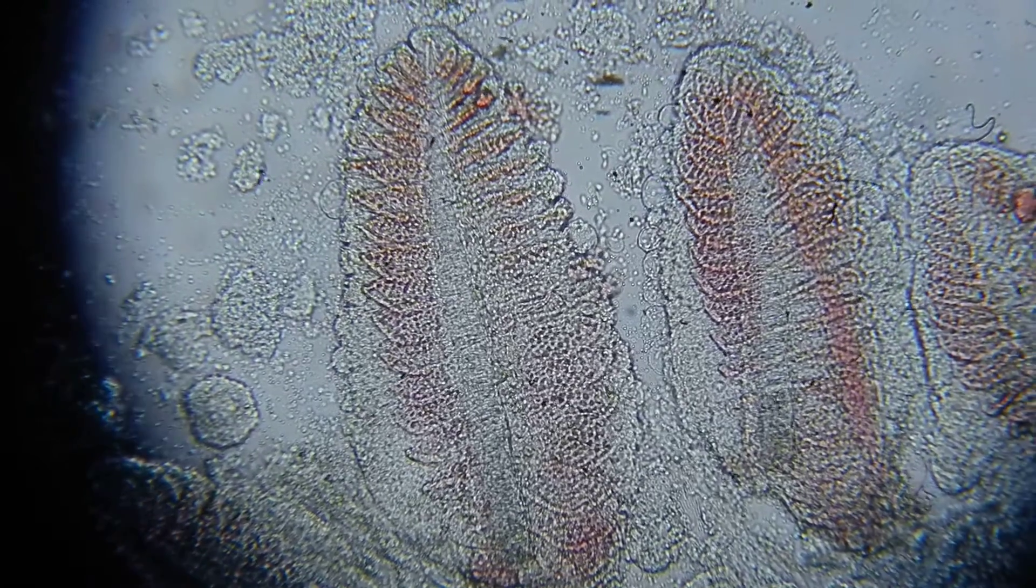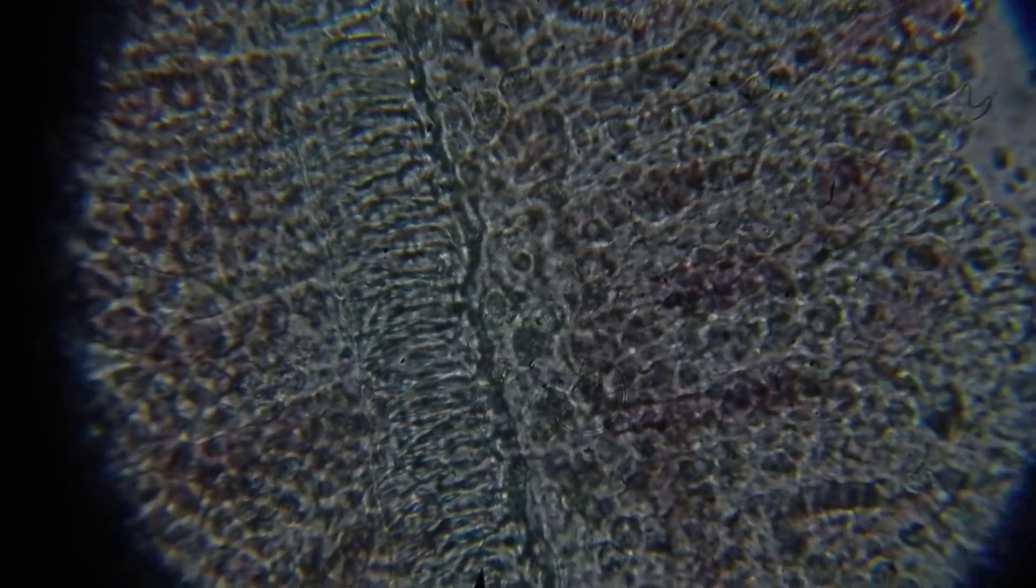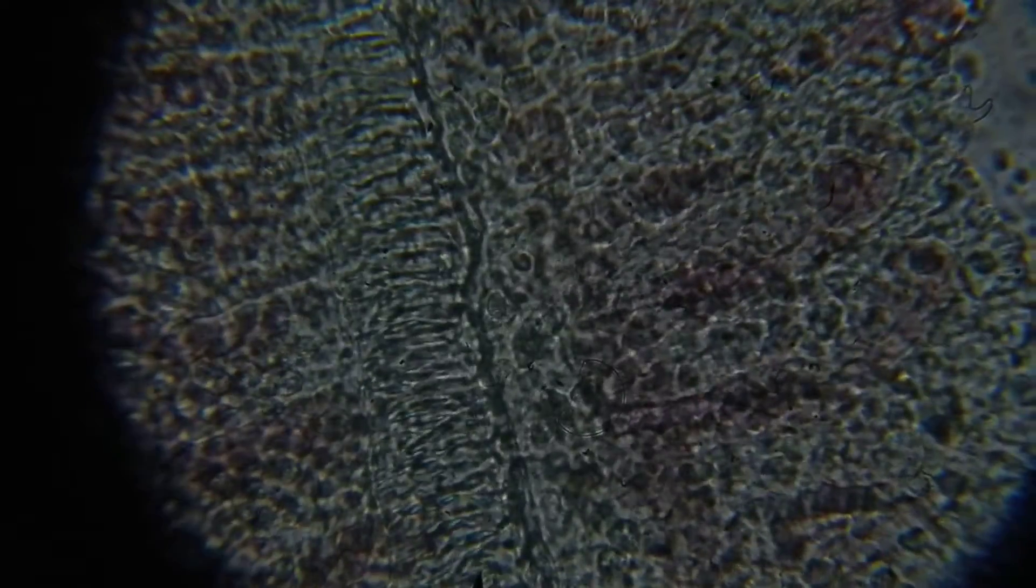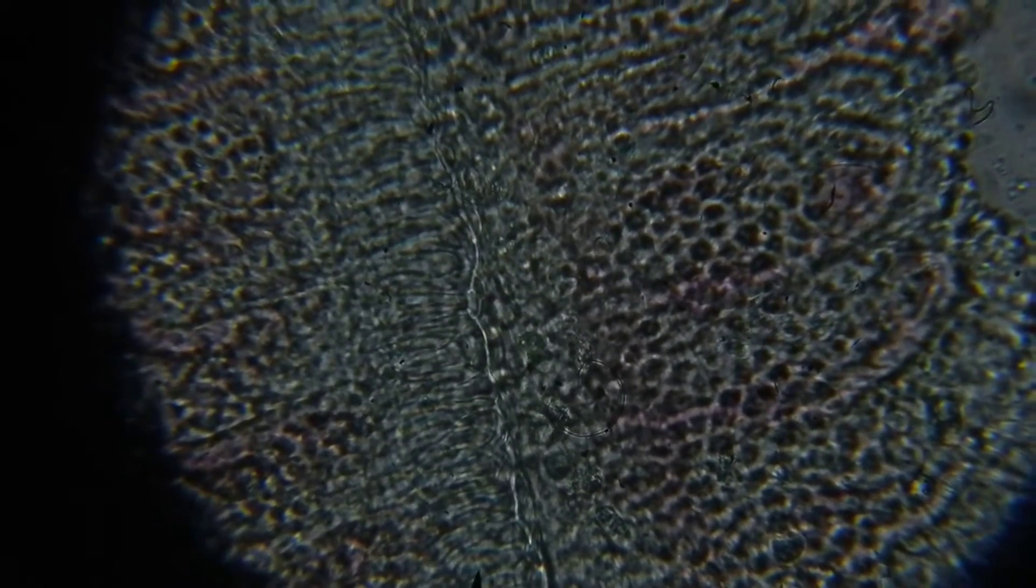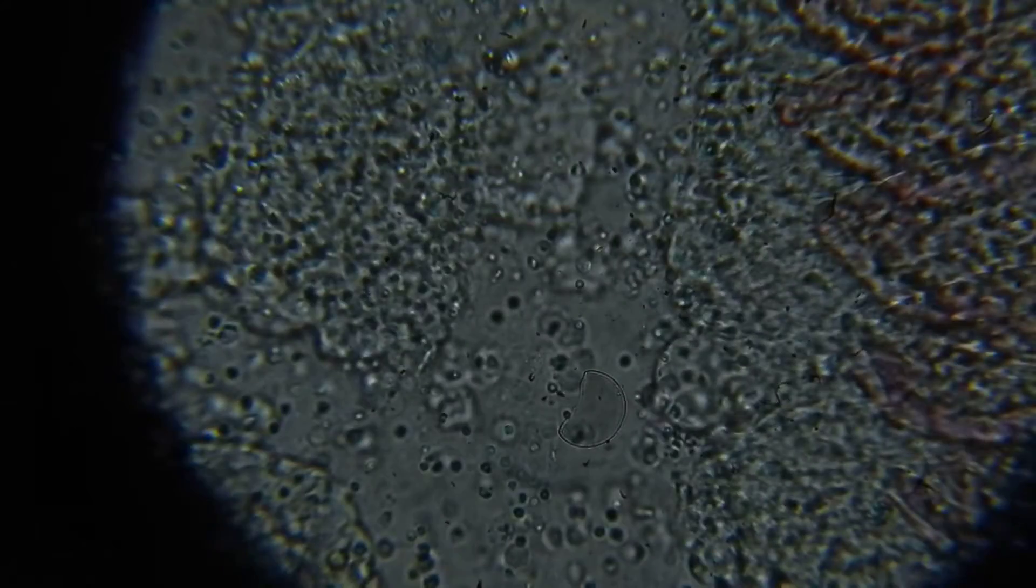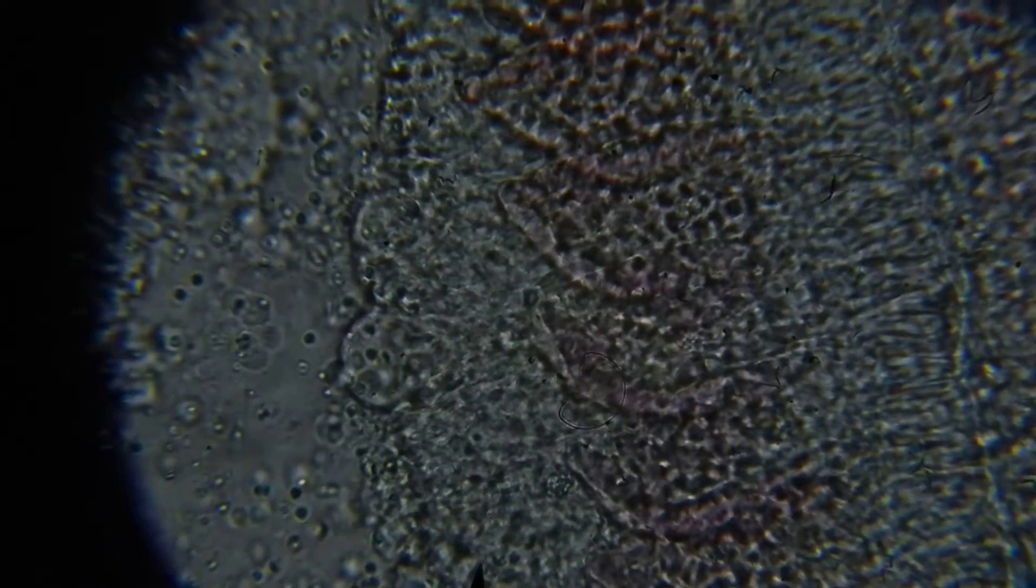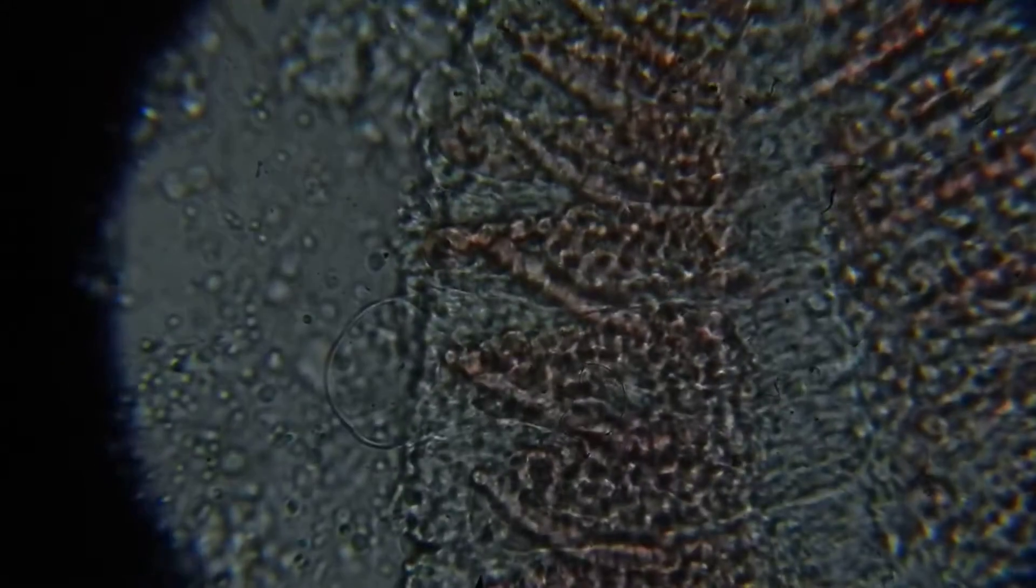So the blood would go one way and the water would be pumped the other way. But enough about structure and function. What you can also notice from this wet prep is that the amount of mucus, which is from here to about here, is sort of quite moderate and is quite low on this side. So this is what a normal healthy gill should look like. It shouldn't have too much mucus at all.